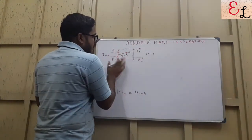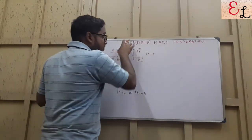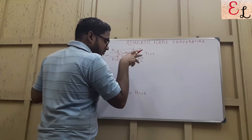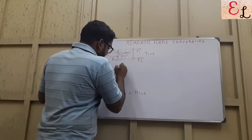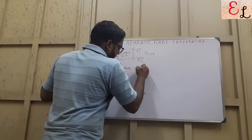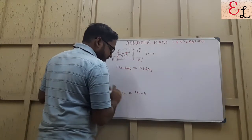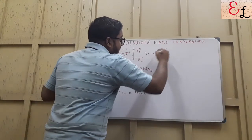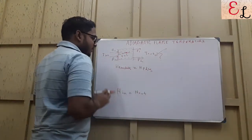So for this control volume, it is a steady state process with no shaft work, and since it is an adiabatic process, we see that H_reactants equals H_products. H_in equals H_out. So to find out T_out — our motive is to find out T_out — we do not know T_out; that is the adiabatic flame temperature.